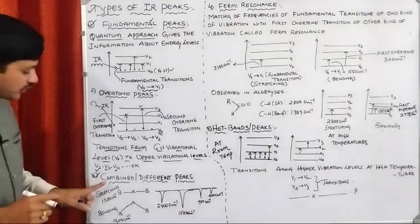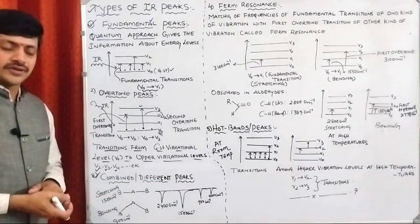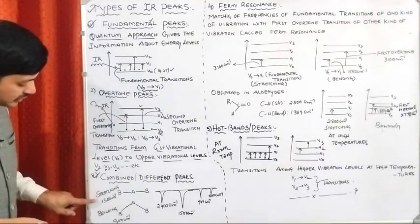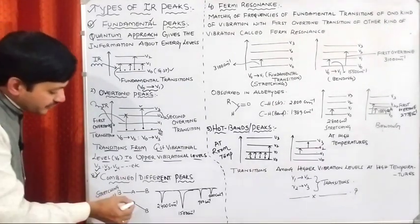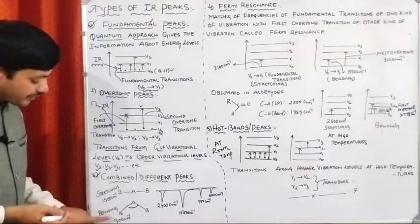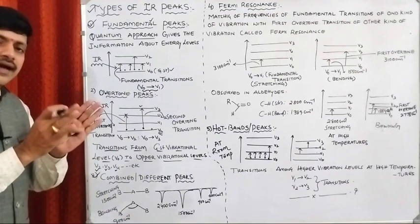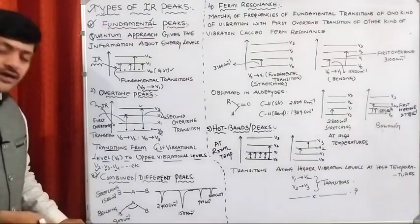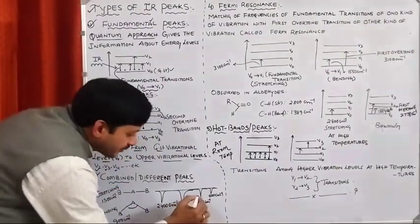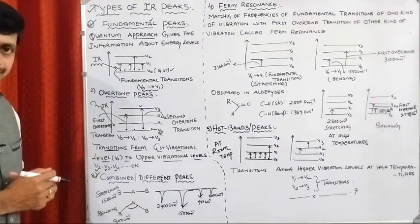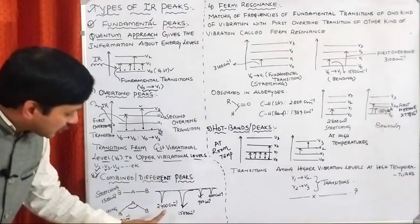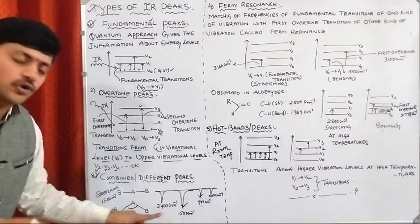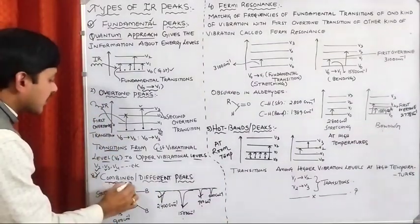The next type of peaks are combination and difference peaks. Here we have a molecule. In the first case, we observe a stretching vibration resulting in one frequency; in the second case, we observe a bending vibration resulting in another frequency. In the IR spectrum, one peak is related to stretching vibration and another to bending vibration. If an additional peak appears by the combination of these two — for example, 1500 plus 900 equals 2400 — those peaks are called combination peaks.